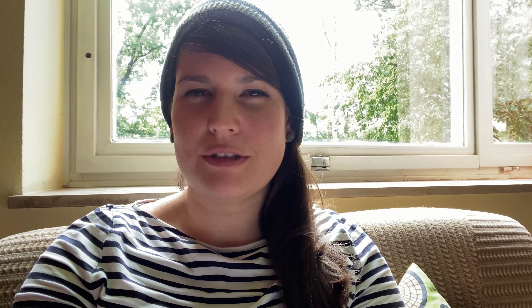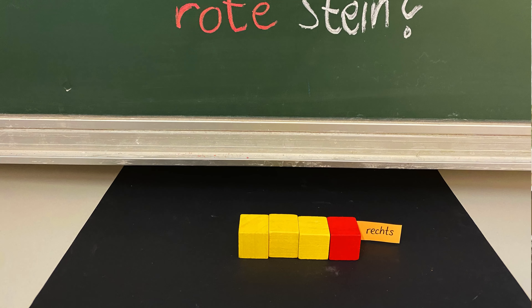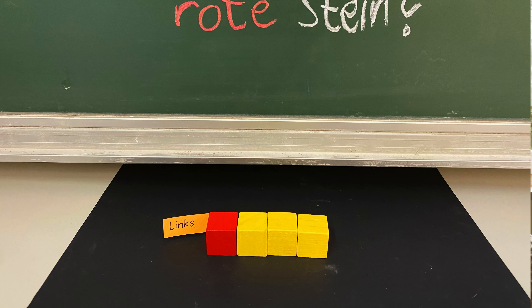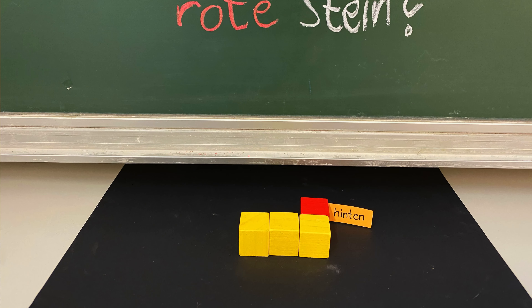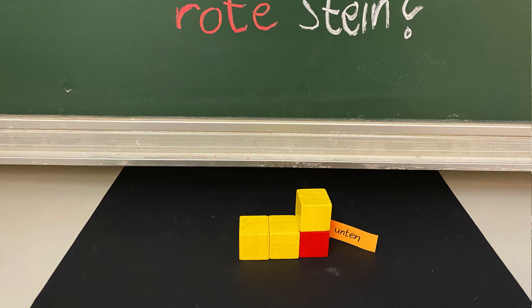Anhand verschiedener Würfelgebäude sollten die Kinder ihre Orientierung im Raum schulen und, weil wir Fachsprache anbahnen müssen und wollen, passende Begriffe zur Beschreibung des Gesehenen verwenden: rechts, links, vorne, hinten, oben, unten.